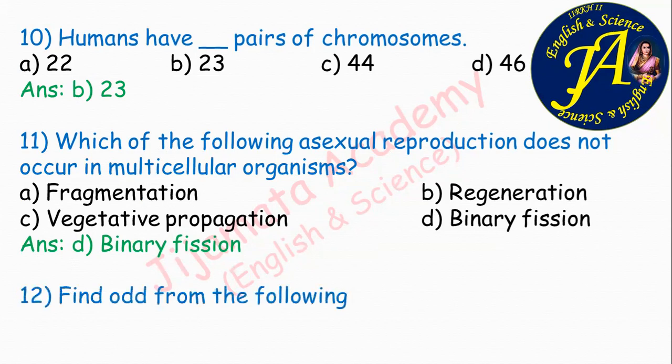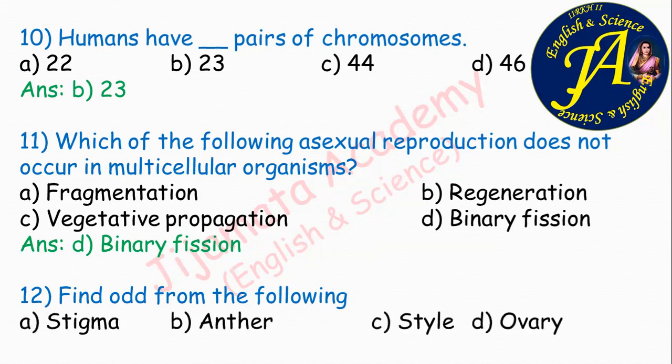Find the odd one out from the following: stigma, anther, style, ovary. Stigma, style, and ovary are parts of gynoecium, while anther and filament are parts of androecium. So the odd one from the following is option B: anther.